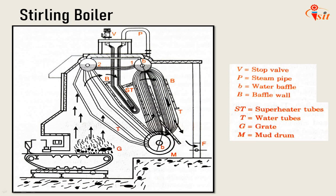The next boiler is the Stirling boiler. The Stirling water tube boiler is an example of a bent tube boiler, which is the second category in the classification. The main elements of a bent type water tube boiler are essentially drums and headers connected by bent tubes. For large central power stations these boilers are very popular, having steaming capacity as high as 50,000 kg per hour and a pressure as high as 60 bar.